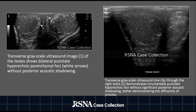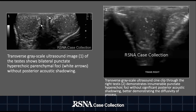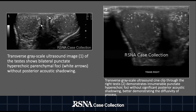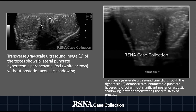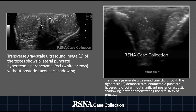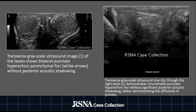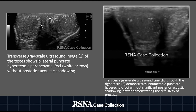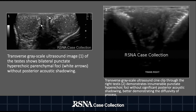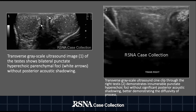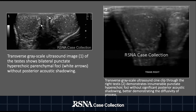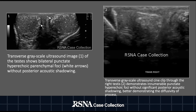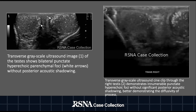Transverse ultrasound examination through the testes demonstrated bilateral punctate hyperechoic foci scattered diffusely throughout the testicular parenchyma, as denoted by the white arrows in figure 1. No posterior acoustic shadowing was identified. The diffuse distribution of the hyperechoic foci is better demonstrated on the transverse cine clip in figure 2.